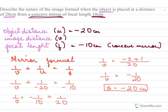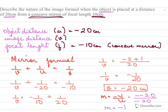Using 1/v + 1/u = 1/f: 1/v + 1/(−20) = 1/(−10), so 1/v = −1/10 + 1/20 = (−2 + 1)/20 = −1/20. Therefore v = −20 centimeters. To find the nature, we calculate magnification.